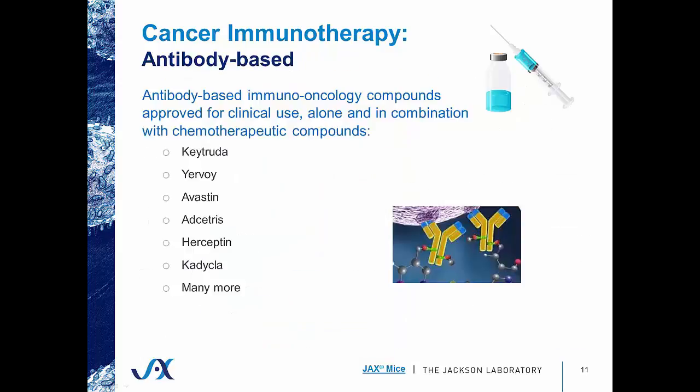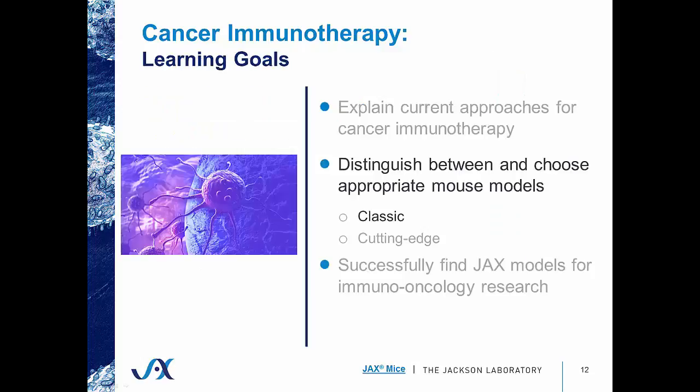Many antibody-based therapies have made it to the clinic and are widely used alone or in combination to treat different cancers, including Keytruda, Avastin, and Herceptin — and these are just some of them. What's important to know is that they all had to be tested in a preclinical model first. So now let's talk about some of those classic models used for cancer immunotherapy.